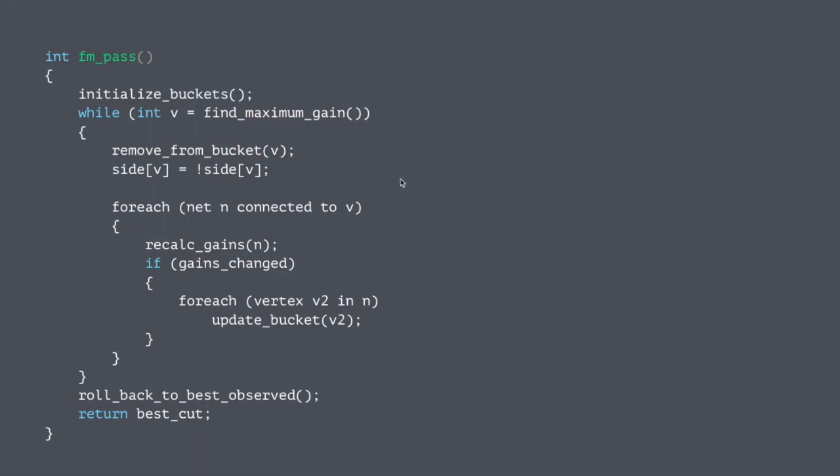All right, so some pseudocode for Fiduccia-Mattheyses pass. Normally you initialize buckets, so you go through the entire graph, you calculate the gain of each vertex, and then you put the vertex into the appropriate gain bucket. And then we've got this while loop, where we're going to grab a vertex that has maximum gain, and because we're doing hill climbing, it might actually be making things worse, but we'll get whatever the best one is.